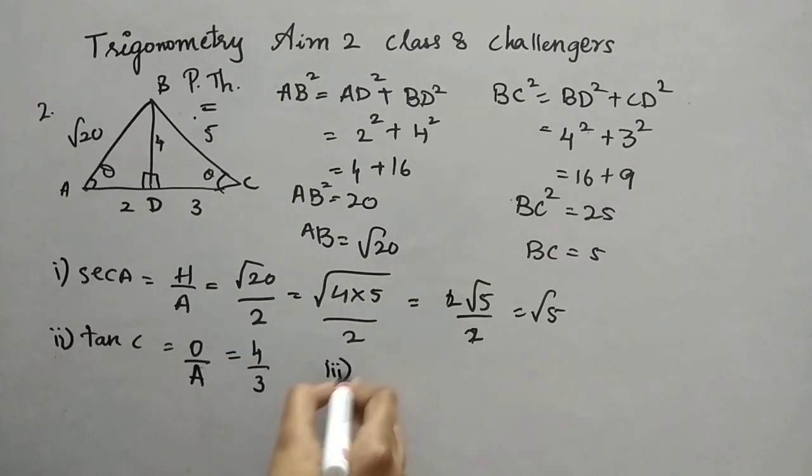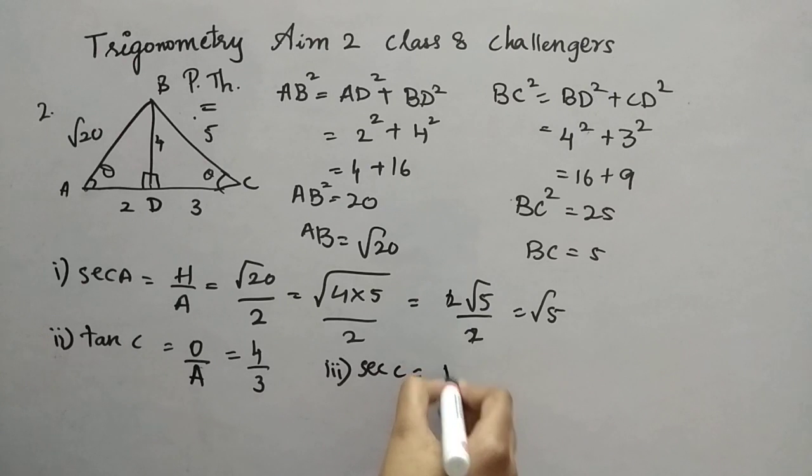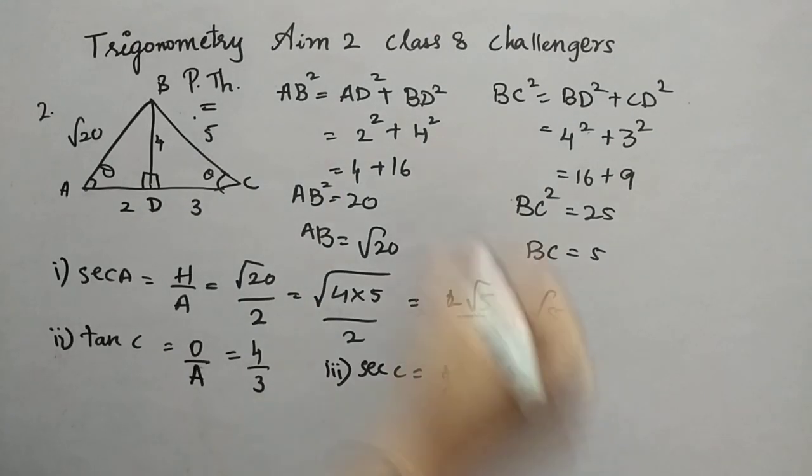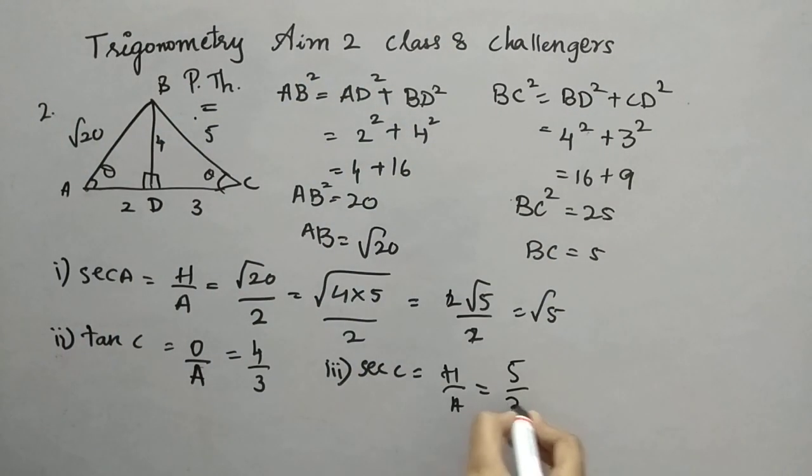Now third one, secant C. That is obviously same formula. Hypotenuse by adjacent, but from this point. So hypotenuse is 5 and adjacent is 3, right? 5 by 3.